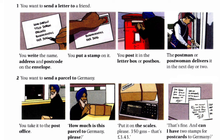Number two: you want to send a parcel to Germany. You take it to the post office. How much is this parcel to Germany, please? Put it on the scale, please. 350 grams — that's $3.43. That's fine. And can I have two stamps for postcards to Germany? New vocabularies in part two: post office, parcel, scale, and postcard.